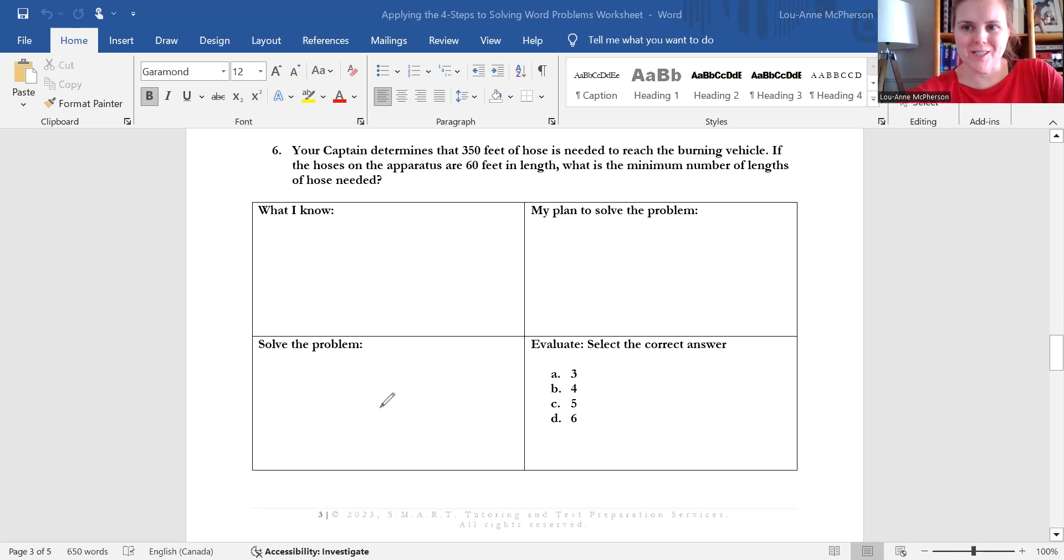Welcome back. This is question six in our firefighter aptitude test preparation series. We are focusing on four steps to solve word problems. This is a strategy that I teach in smart tutoring. My name is Luann and I am a firefighter aptitude test preparation tutor. The four steps in terms of how to solve a word problem are identifying what you know out of the problem, planning to solve the problem, solving the problem, and then evaluating the answer.